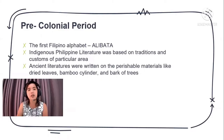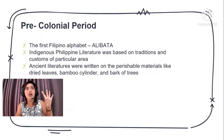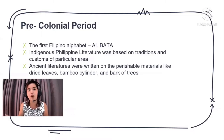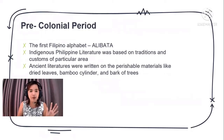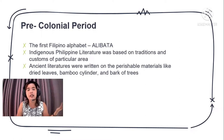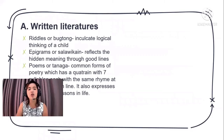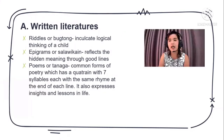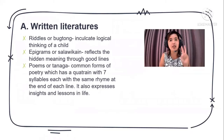Way back then, people tried to communicate using dried leaves — there was no real paper. They also tried to write love letters on trees. You may have seen this in different movies, on Netflix, or on YouTube. Pre-colonial literature is divided into two forms: written literature and oral literature.